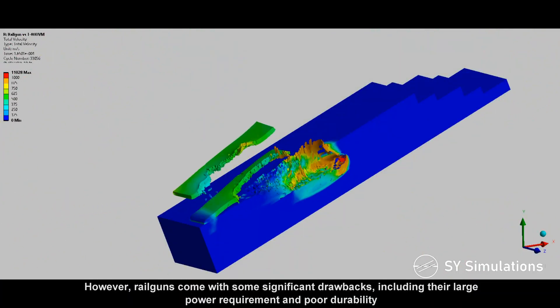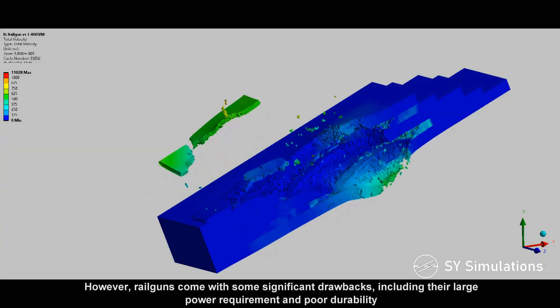However, railguns come with significant drawbacks, including their large power requirement and poor durability.